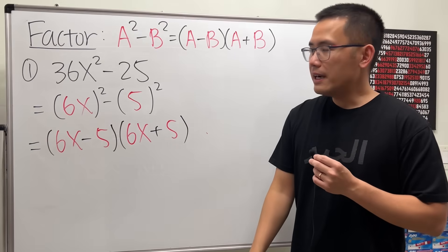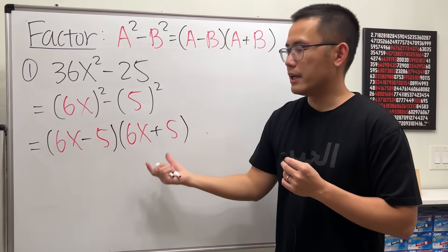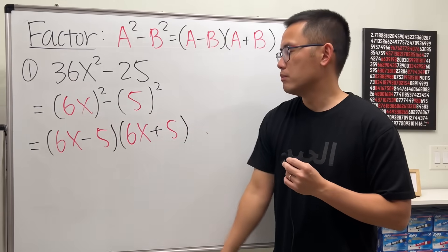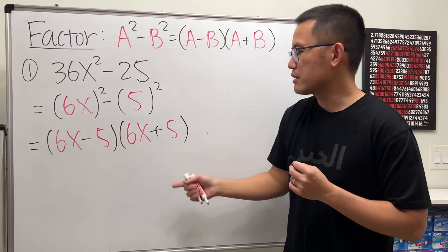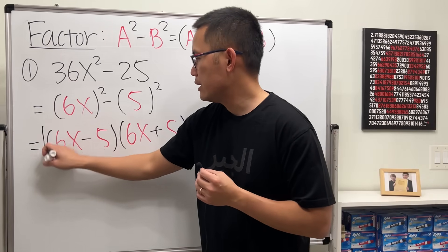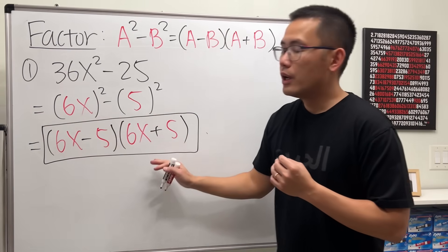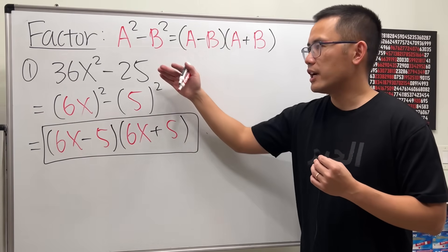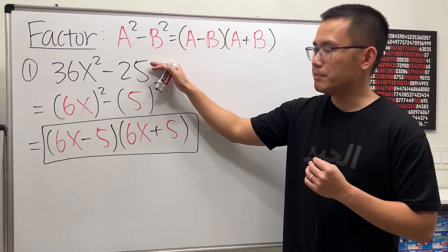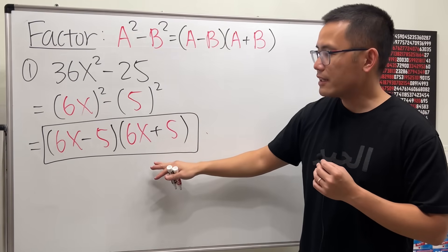For factoring you want to end up with two factors multiplying. You should always check: can you do more? They don't have any common factors, so this is the most we can do. Leave it like this — don't multiply it out. You could multiply it out to check your answer, but for factoring you want to leave this as your answer.